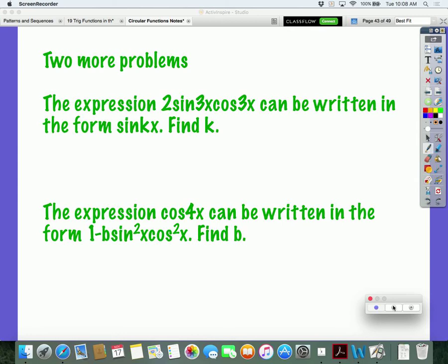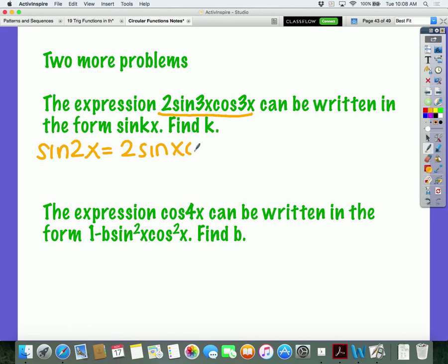Now this expression right here looks very similar to what? The double angle identity for sine. So normally sine 2x is 2 sine x cosine x, correct?